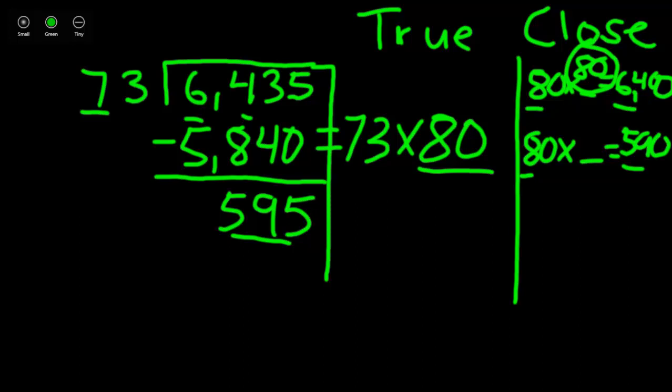So I would say 80 times 7 will get me close to 590 but not over. Now this isn't a true statement here. This is close. But we're going to use that 7 to help us break down our divisor, or our dividend rather. So let's bring that back here.